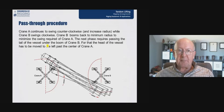The next phase requires passing the tail of the vessel under the boom of crane B. So we've now got to get the tail round and under the boom here. For the head of the vessel has to be moved to the left, past the centre of crane A, so we have to actually continue over in this direction.